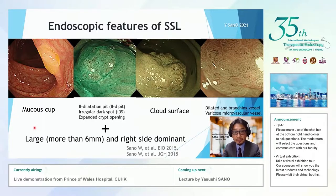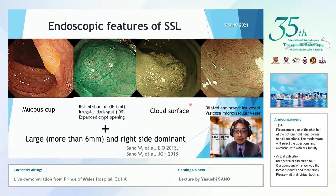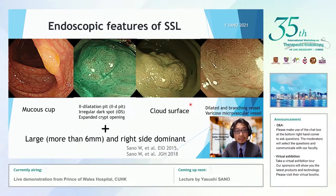Endoscopic findings of the sessile serrated region include a mucus cap, open type 2 pit, the cloud surface, and the dilated branching vessel. However, low diagnostic sensitivity is one of the problems. Therefore, we remove the sessile serrated region more than 6 mm in size showing pit type 1.